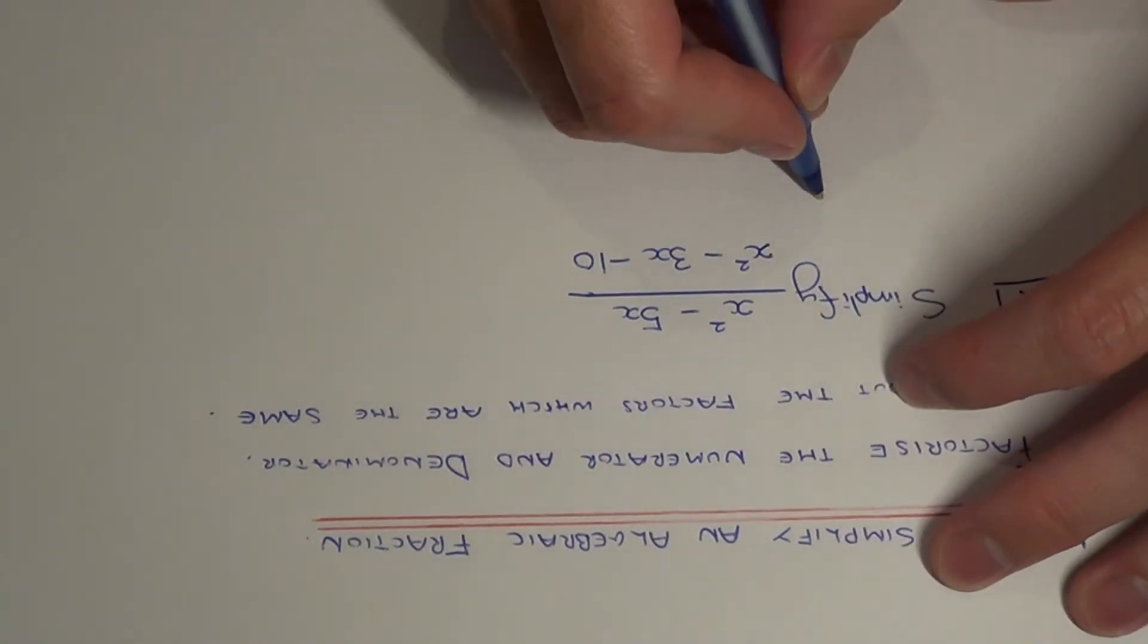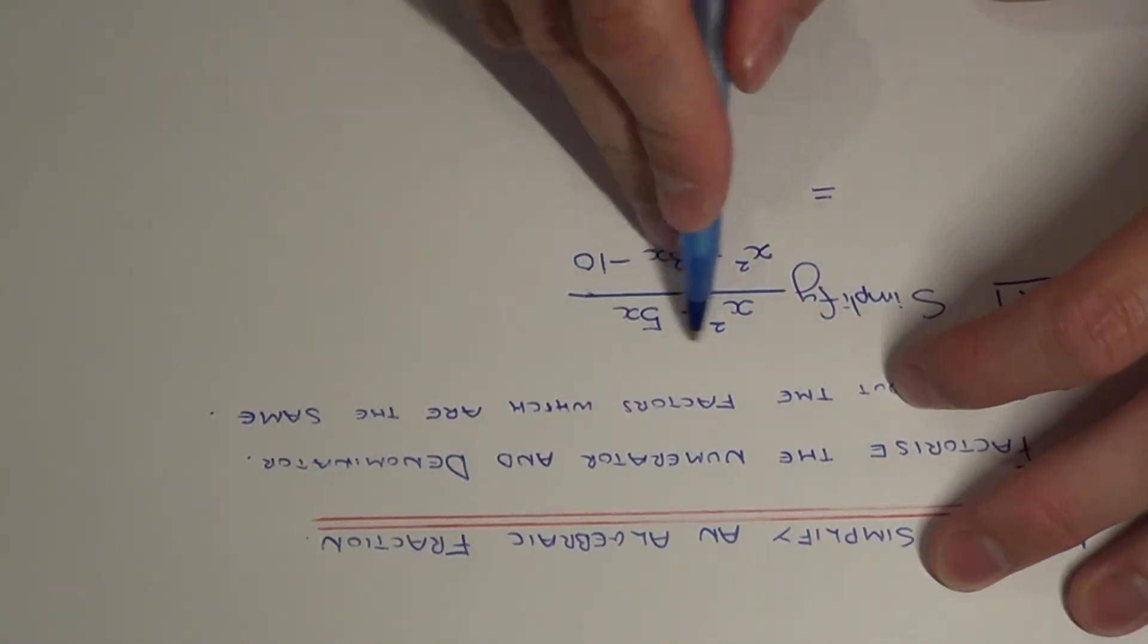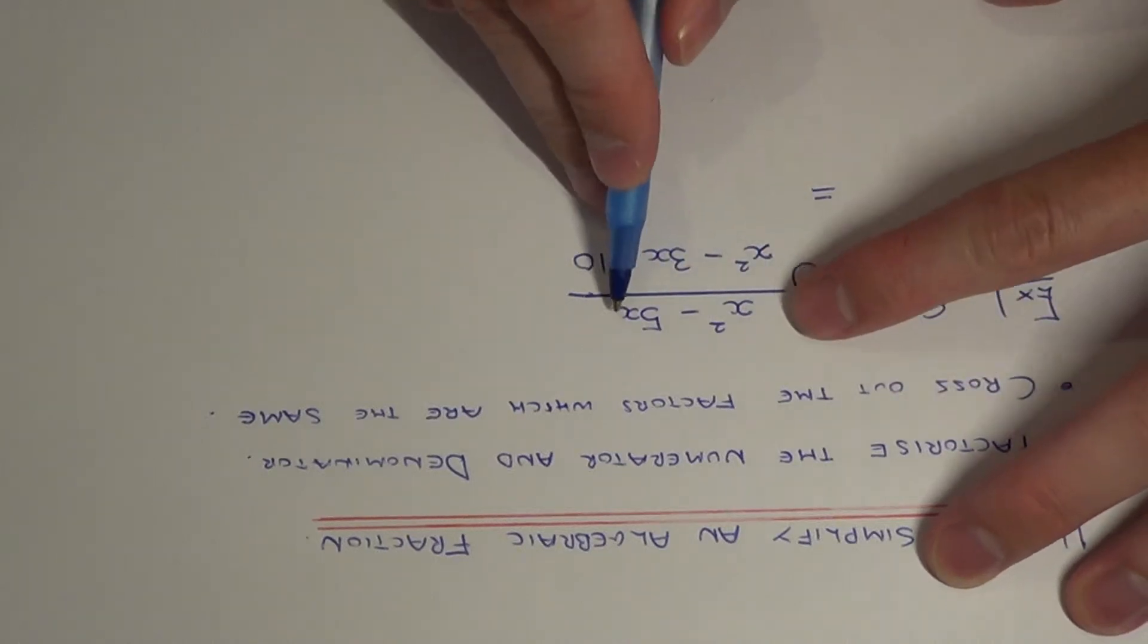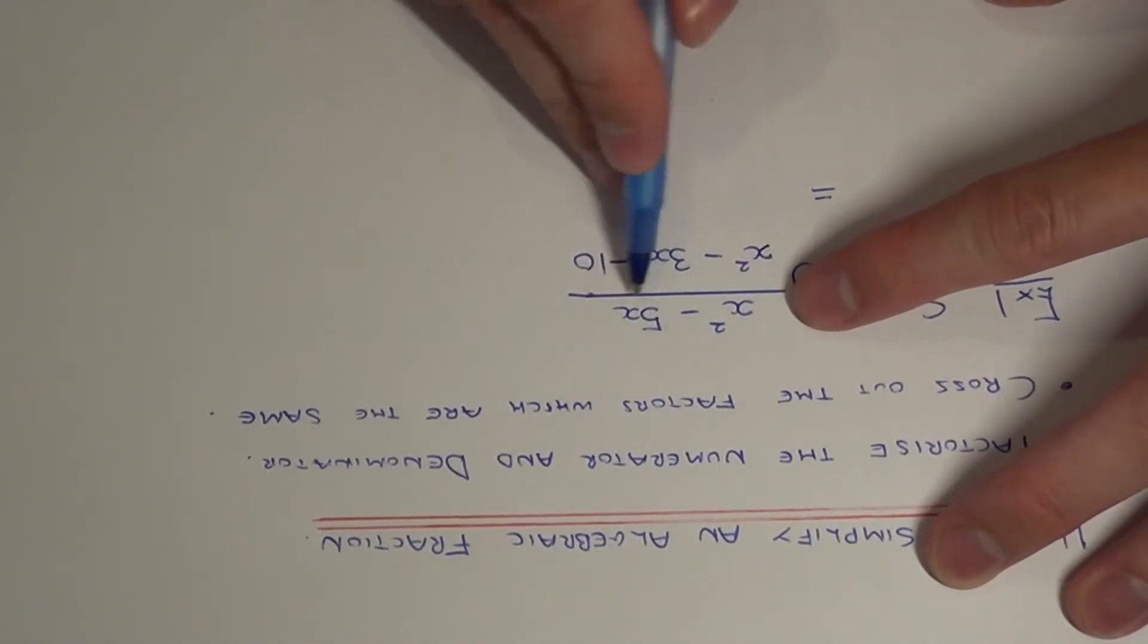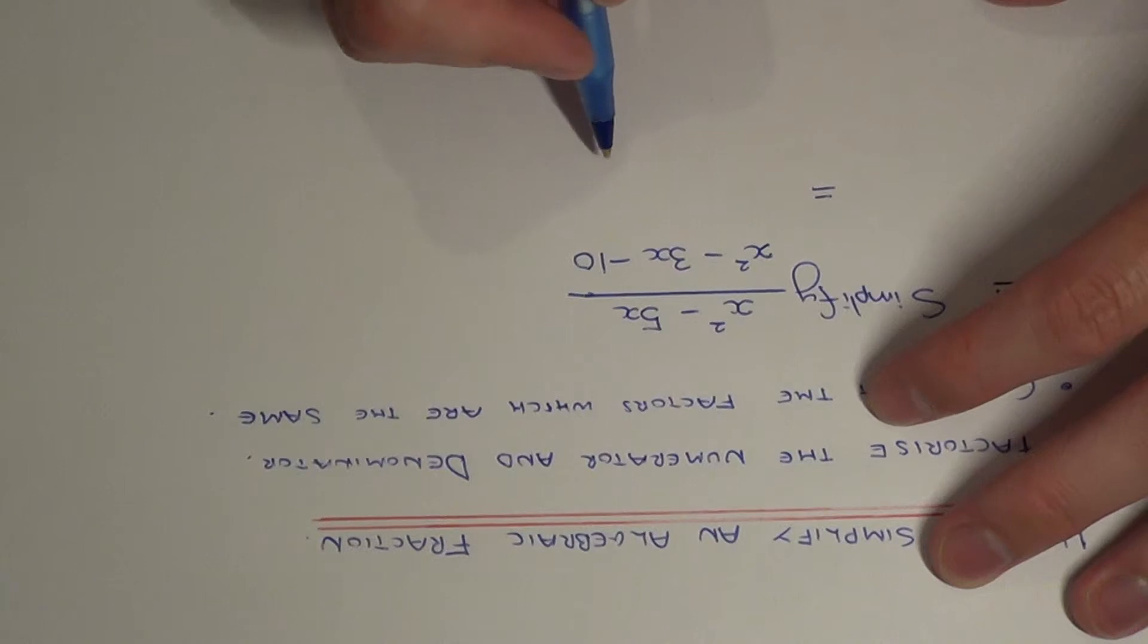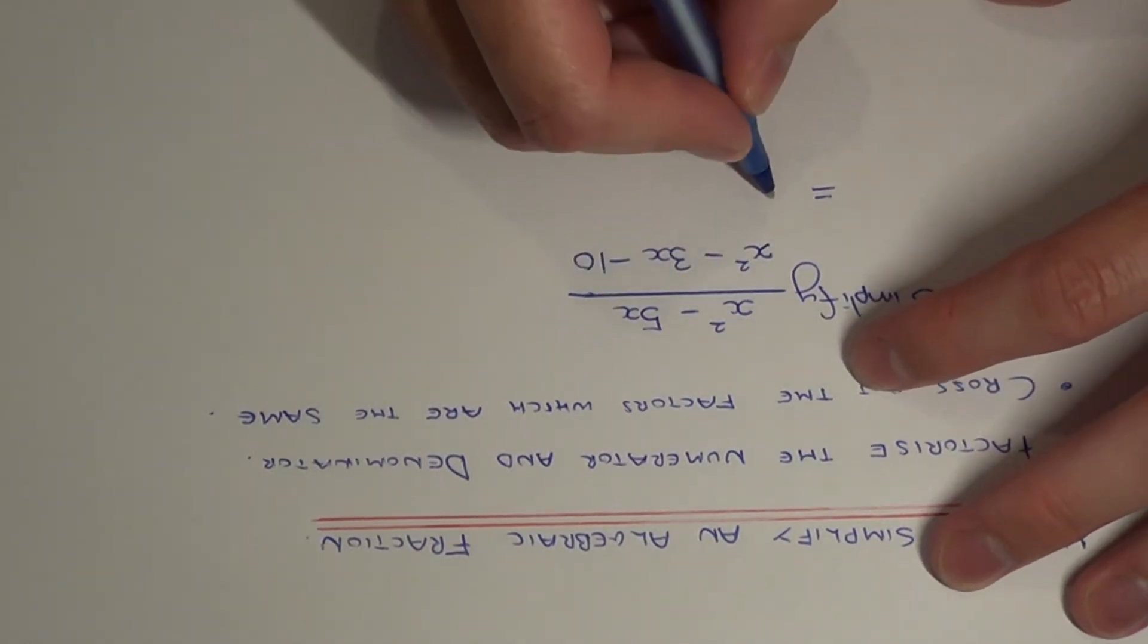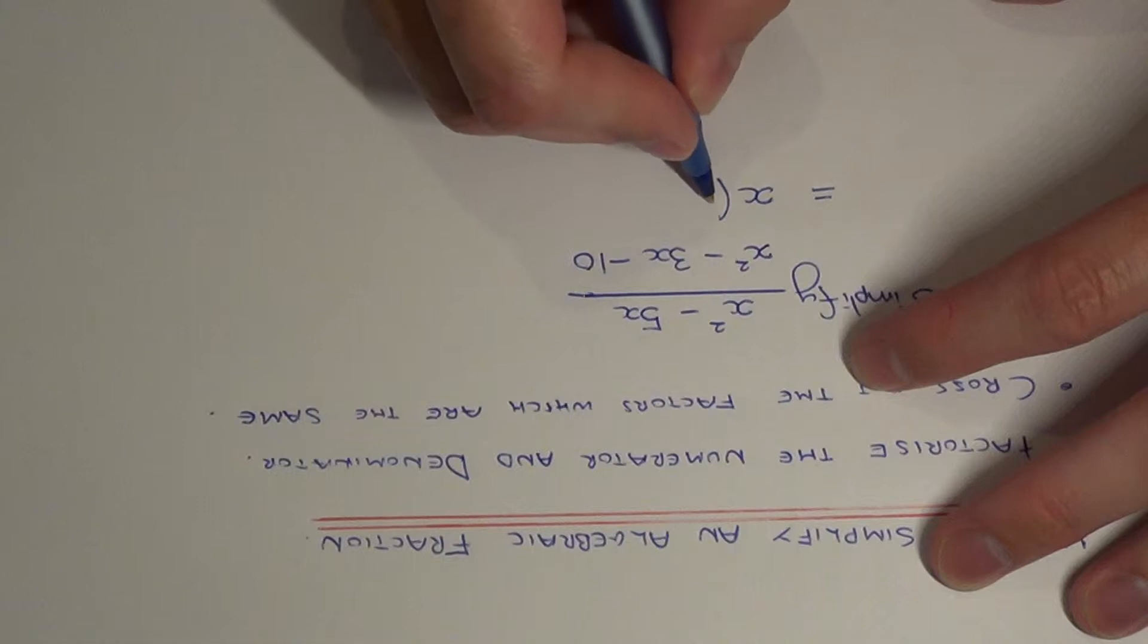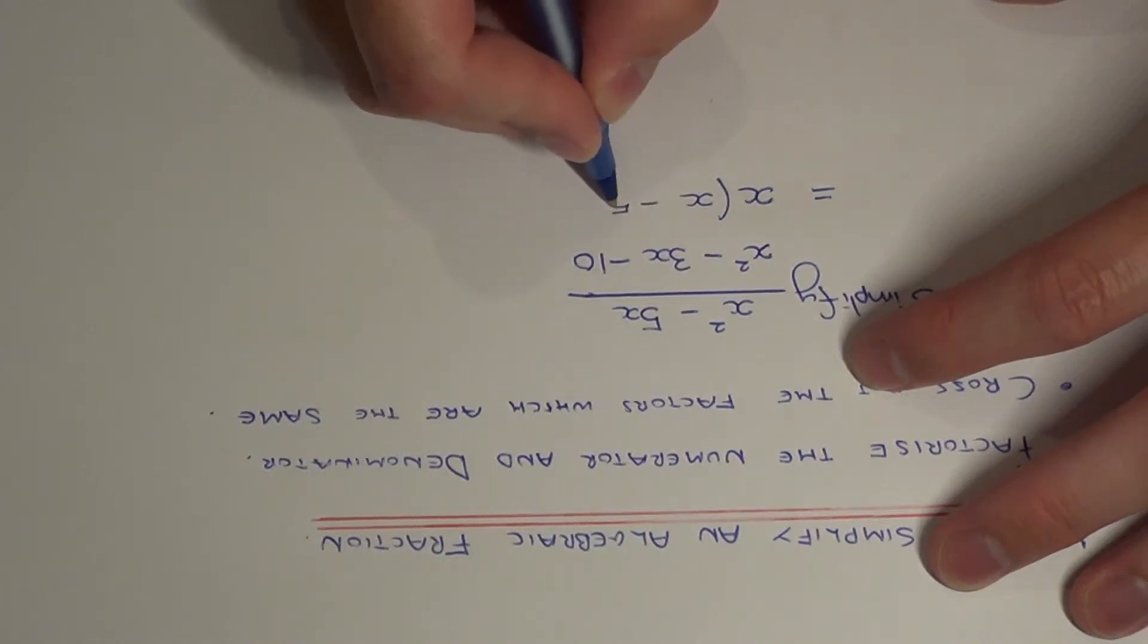So first of all, let's factorise the numerator. The numerator is a single bracket expression, so we just need to take the x out and inside the bracket we'll have x minus 5.